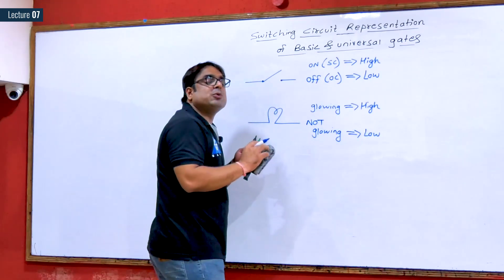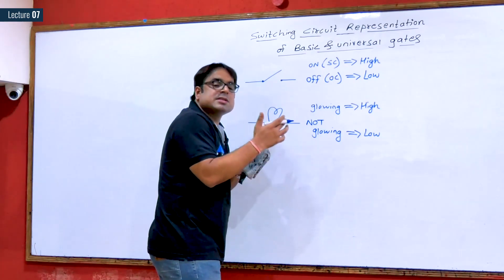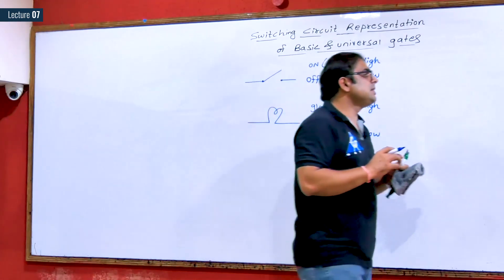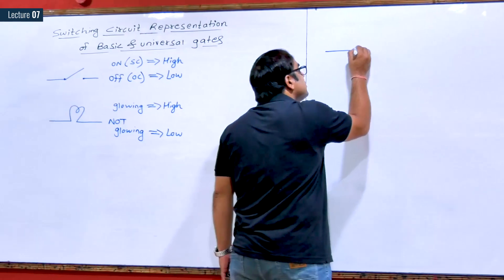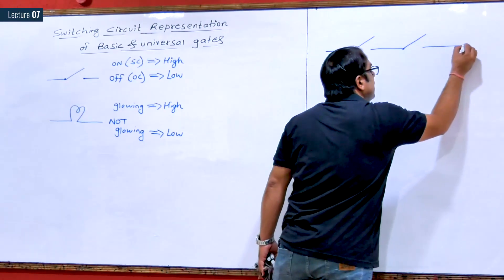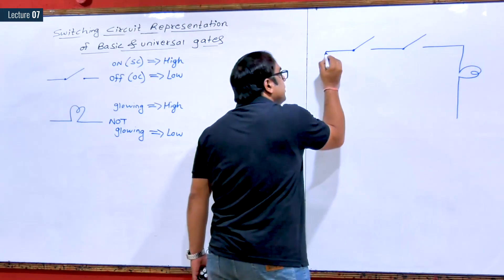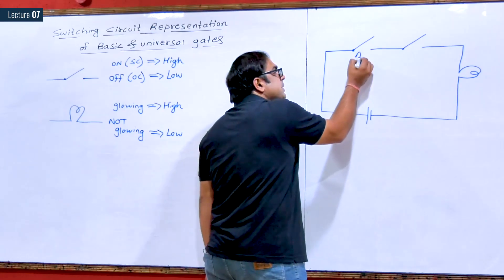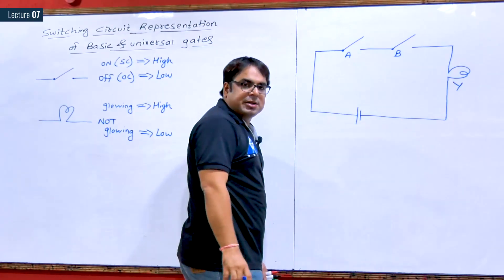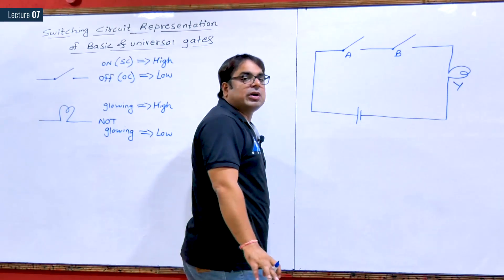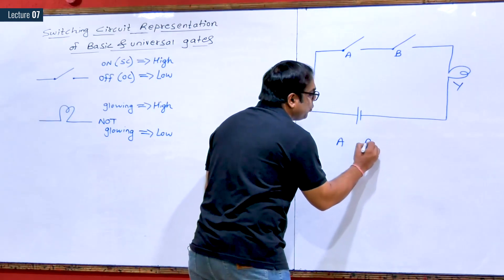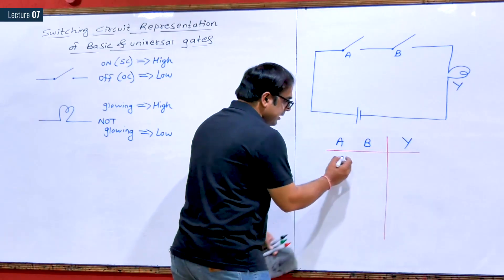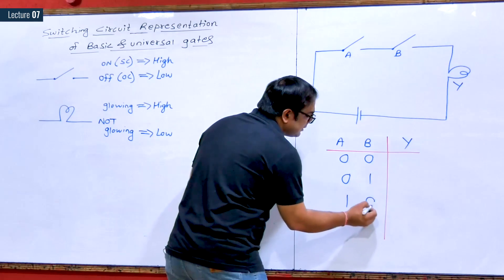Let us build a circuit that resembles a particular gate. If I use two switches A and B in series connection and observe the output from a bulb with a voltage source, we have four input combinations since there are two inputs: 00, 01, 10, and 11.